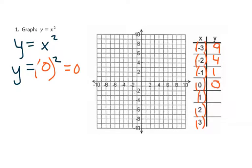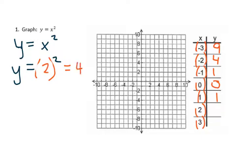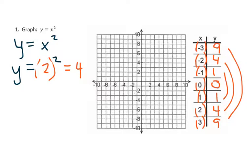Just like with linear equations, you will start seeing a pattern. It turns out that every number, whether positive or negative, when squared will always be positive. So we're going to go back up this Y list — 2 squared is going to be 4, and as you can see, there's a mirror here, so 3 squared is going to be 9 without doing the work.